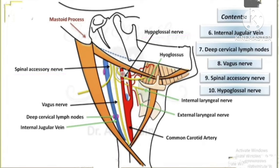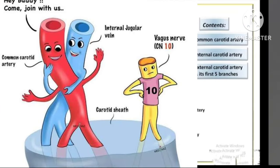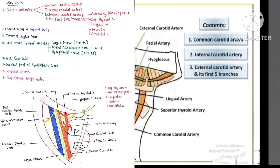The internal jugular vein, vagus nerve, and common carotid artery are all enclosed in a fibrous covering called the carotid sheath. On the anterior surface of the carotid sheath lies the ansa cervicalis, which is a loop from the cervical plexus that supplies four infrahyoid muscles. Behind the carotid sheath, you can see the sympathetic chain of the cervical region. These are the contents of the carotid triangle.